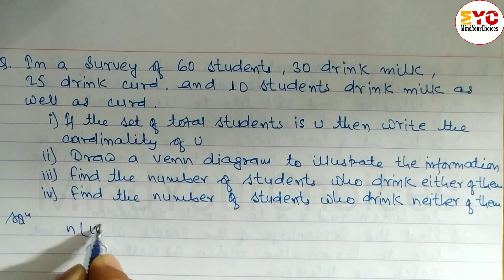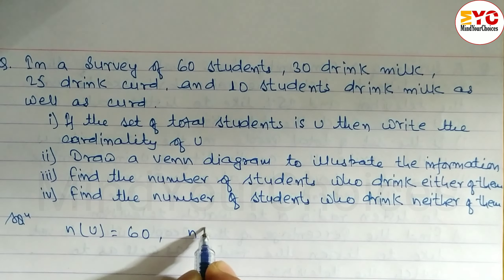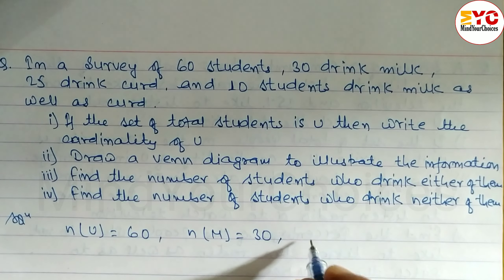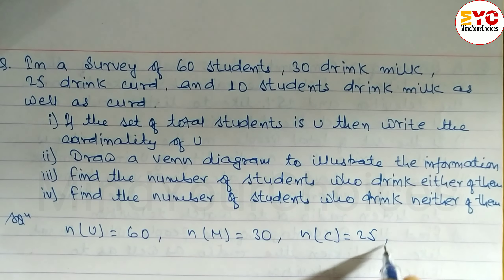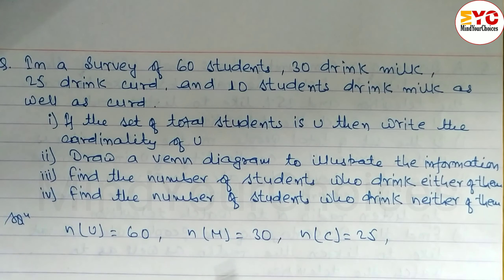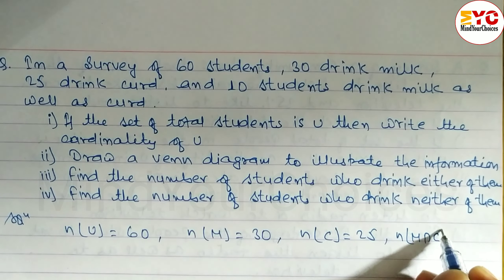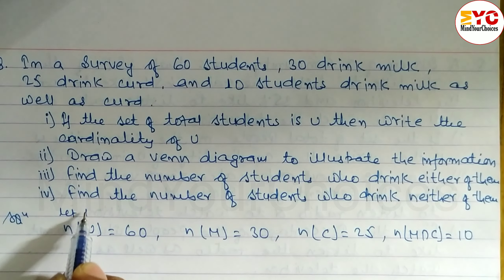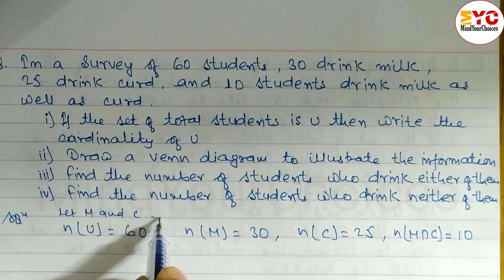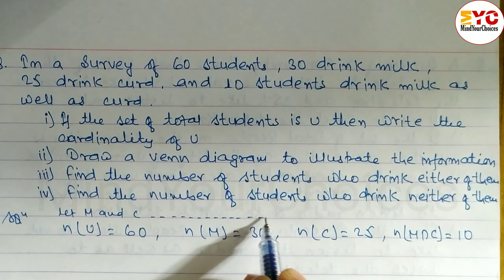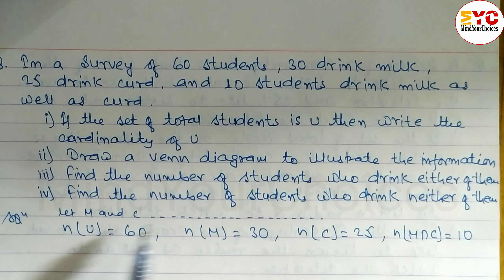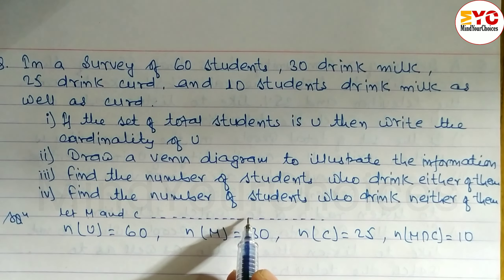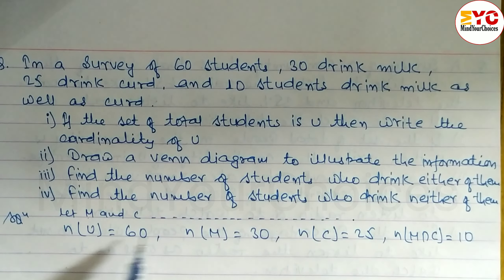First write: n(U) is equal to 60. After that, n(M) — 30 drink milk — so n(M) is equal to 30. 25 drink curd, so n(C) is equal to 25. 10 students drink milk as well as curd — both together, that is the intersection — so n(M ∩ C) = 10. Let M and C represent the number of students who drink milk and curd respectively.